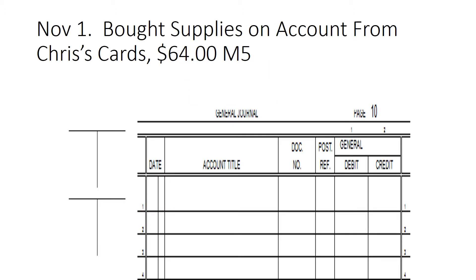We see a transaction here — very familiar if you've been with us through the whole trimester or school year. Bought supplies on account from Chris's Card, $64, memorandum number five. A couple things to point out: there's that 'M' again — it does mean memorandum. It also means multiple lines, and you'll kind of see that.